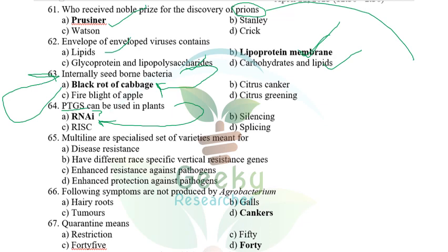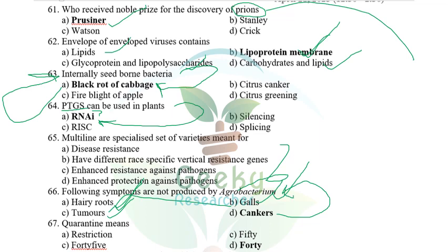Multi-lines are specialized varieties meant for — possibly disease resistance or vertical resistance and horizontal resistance or enhanced production; I'm not sure. Which symptom is NOT produced by Agrobacterium? Hairy roots, galls, and tumors are produced by Agrobacterium. Cankers are not produced by Agrobacterium — the answer is cankers.